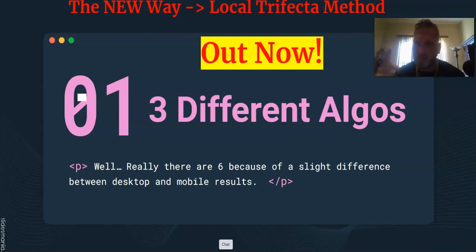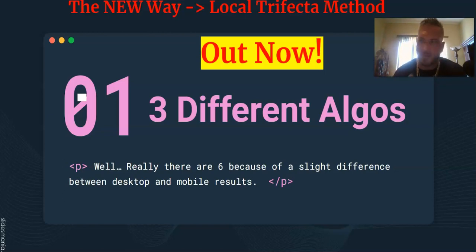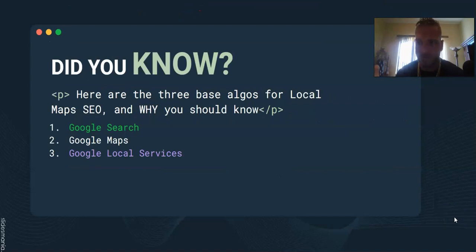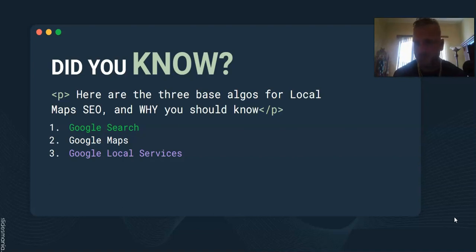We've been getting some amazing feedback — turning red grids green. But enough of that, let's jump into it. Technically there are six algorithms because you've got a difference between desktop and mobile, but I'm not even going to go there. Literally no one's ever spoken about this, and it's a completely new category. I had to make up a word — some 'Brockisms' — and our third algorithm is the local Google Local Services algorithm.